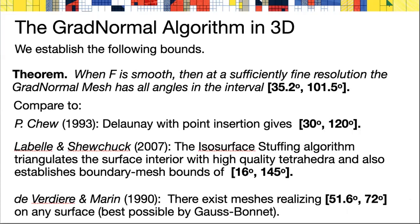We can compare this to previously known results. Paul Chew had an algorithm in 1993 that gives Delaunay triangles with point insertions and winds up with angles between 30 degrees and 120 degrees. I believe this is the best angle bound previously obtained. LaBelle and Shewchuk have a nice isosurface stuffing algorithm which also triangulates the interior of the surface. The bounds that it establishes on the boundary are between 16 degrees and 145 degrees.